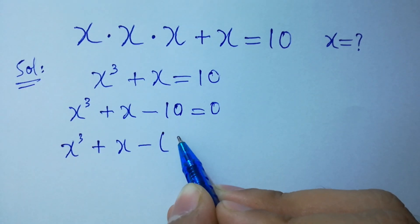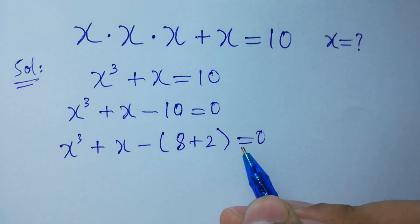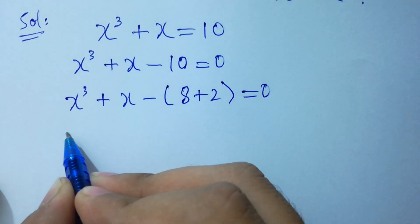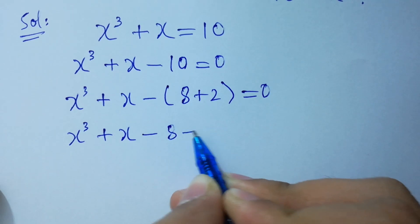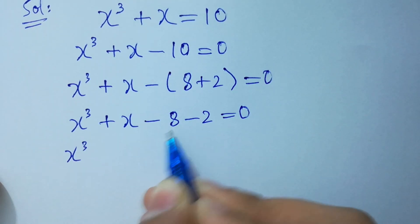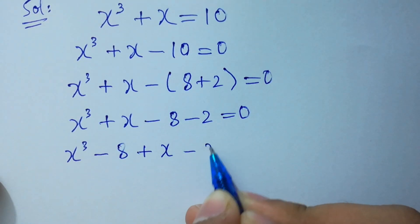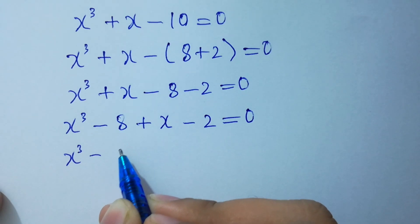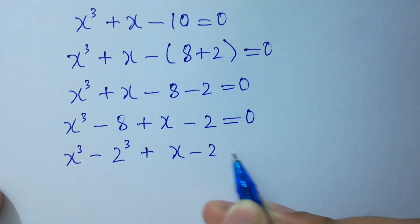10 equals 8 plus 2. 8 is 2 cubed. So we rewrite: x cubed plus x minus 8 minus 2 equals 0, which becomes x cubed minus 2 cubed plus x minus 2 equals 0.